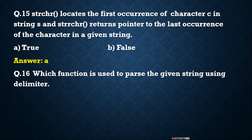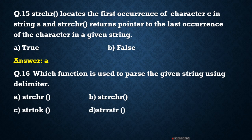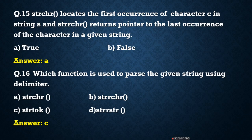Which function is used to parse the given string using a delimiter? Options: strstr, strchr, strtok, strcat. The correct answer is C — strtok. This is the string tokenization function. Tokenization means when you want to divide the string based on a delimiter — either N characters, blank space, or comma — at that time you can use the function strtok.